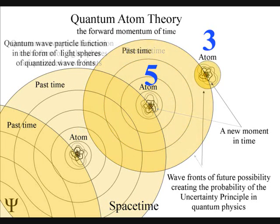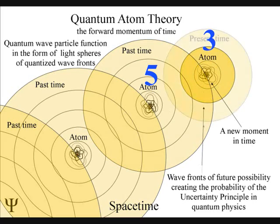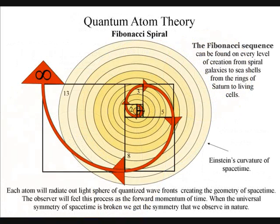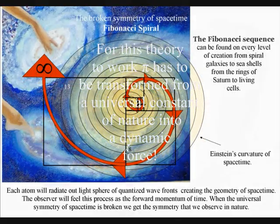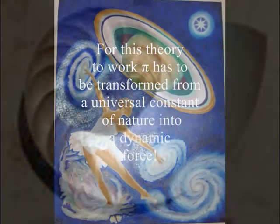The mathematics of the golden ratio and the Fibonacci sequence are intimately interconnected. The Fibonacci sequence can be found on every level of creation, from spiral galaxies to sea shells, from the rings of Saturn to the living cells.